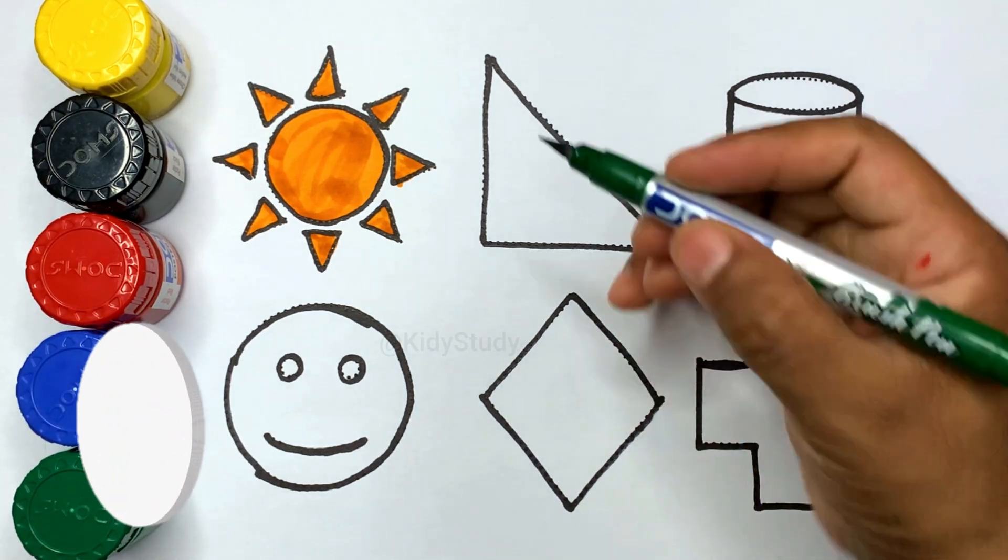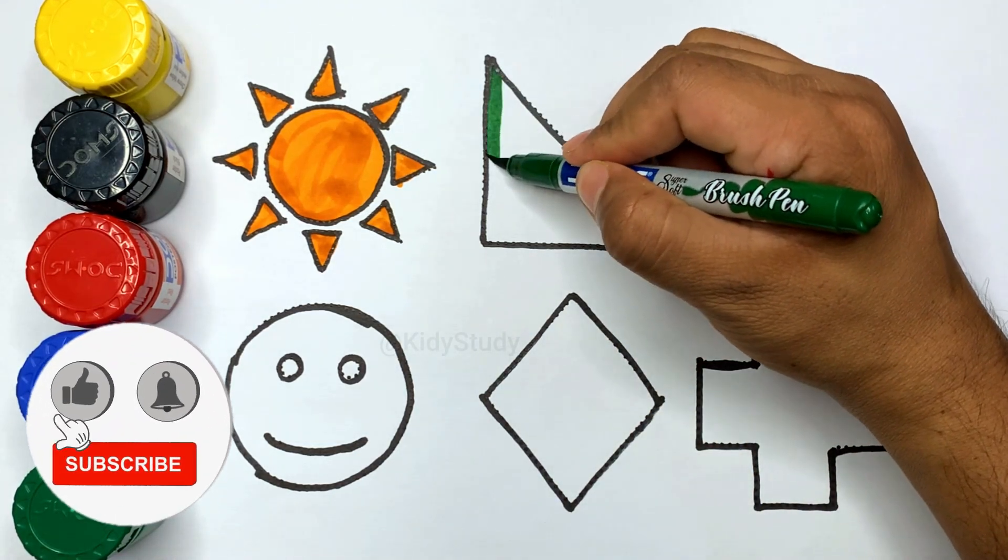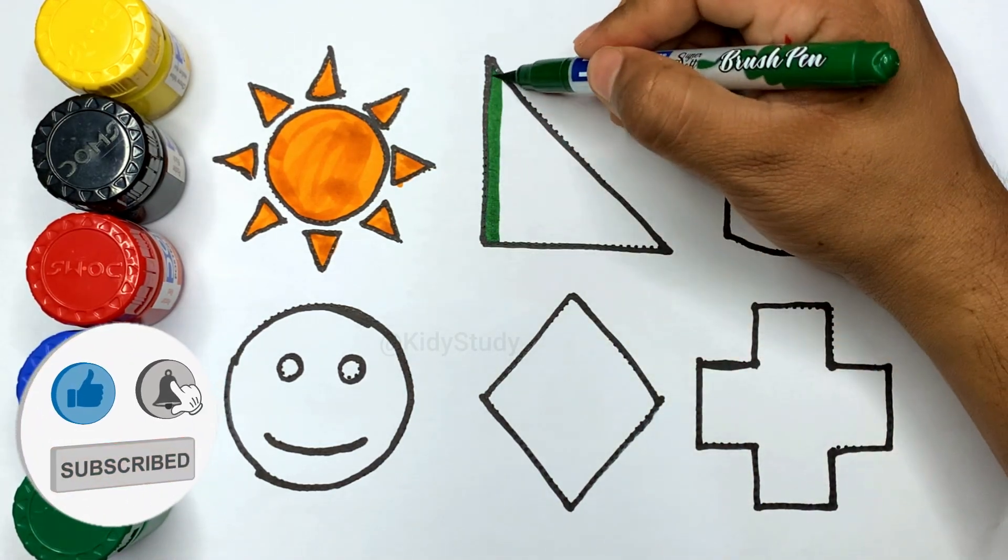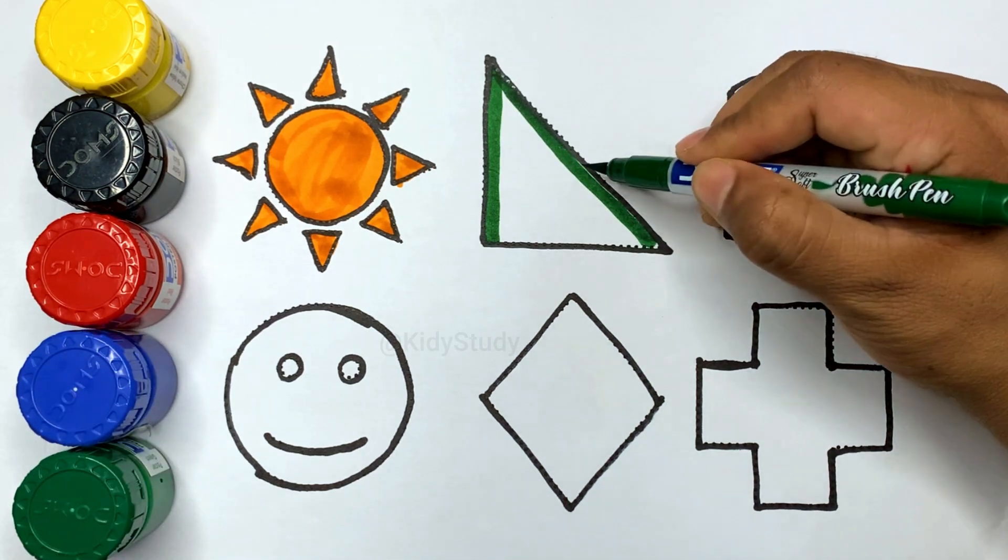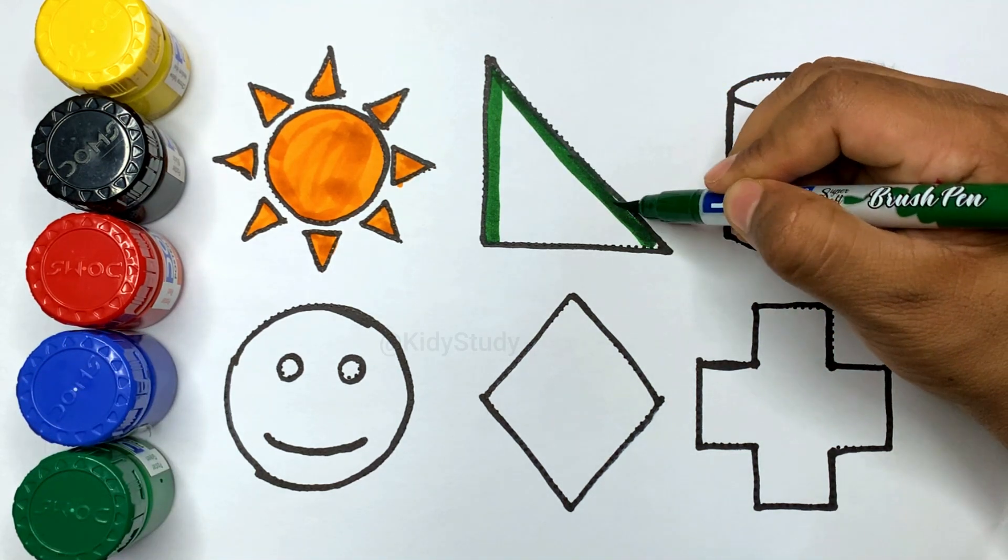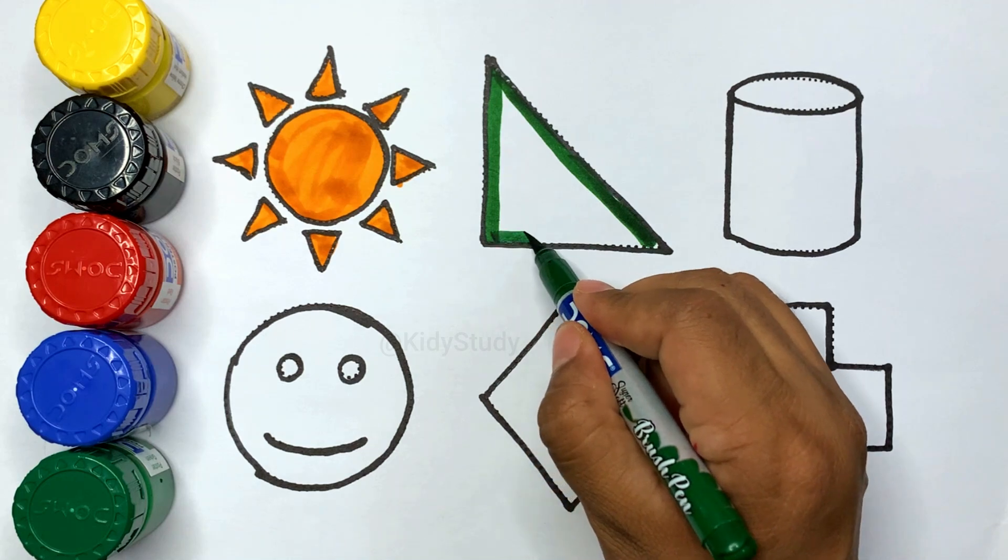Green color. Kids, here is right angle triangle. कौन सा shape kids? Here is right angle triangle.